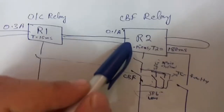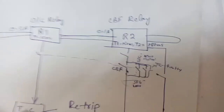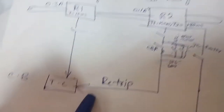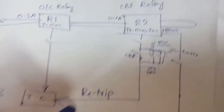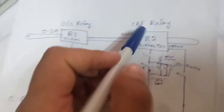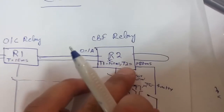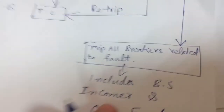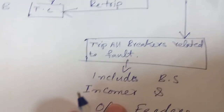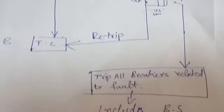Another concept: instead of using T1 and T2, some schemes do not give the same breaker a re-trip chance, because the breaker has already failed. In those schemes, we keep only one timer, and after that time is reached, it trips all related fault-side breakers directly. This completes the whole concept of circuit breaker failure. Now we move to the setting and configuration.